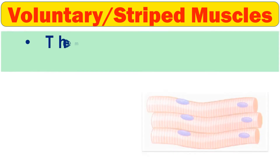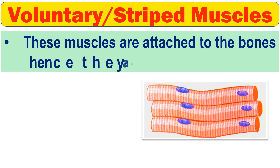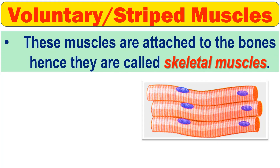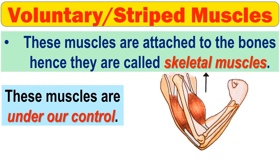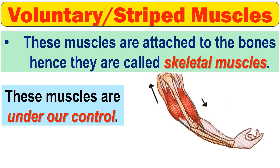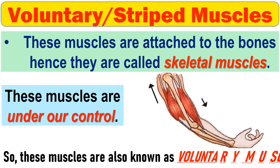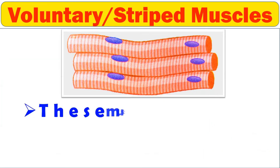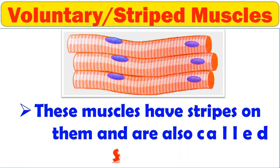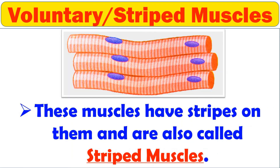The first type is voluntary or striated muscles. These muscles are attached to the bones and hence are known as skeletal muscles. These muscles are under our control, and so they are also known as voluntary muscles. They have stripes on them, and so they are also known as striated muscles.